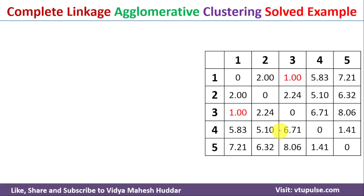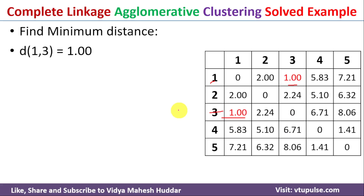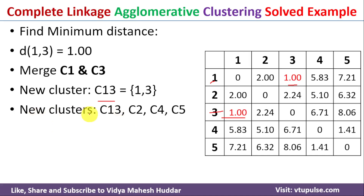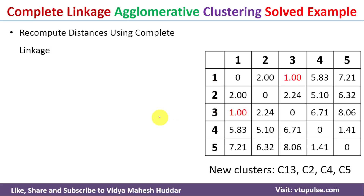The minimum distance is 1, and this distance is between clusters 1 and 3. So we need to merge clusters C1 and C3, giving us the new cluster C13. After merging, we have the new clusters: C13, C2, C4, and C5.